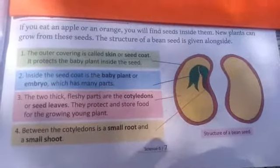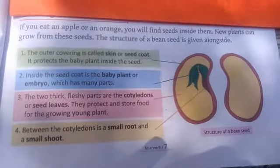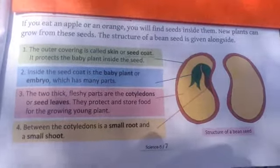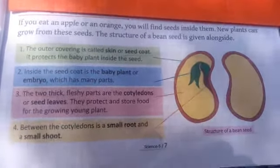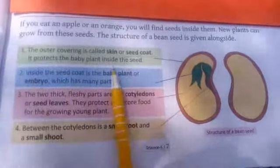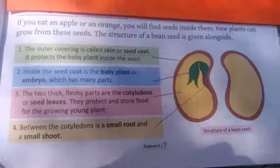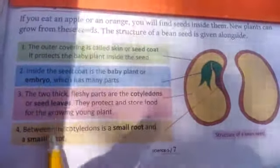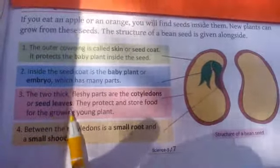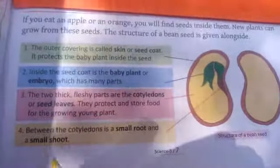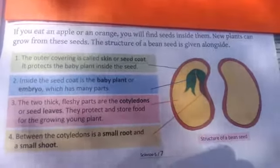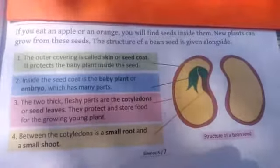Let me summarize today's topic. In a seed, there are a few parts: first, the seed coat; second, the baby plant or embryo; third, the seed leaves or cotyledons; and last, the small root and small shoot. Please revise today's topic.